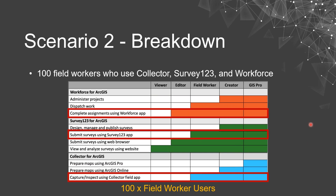For our field workers who need to use Collector, Survey123, and Workforce: to use Survey123 and Collector as native apps you need a field worker user type and above — this includes offline capabilities. Even though Workforce can be completed with an editor level, everything else corresponds to field workers, so it makes sense to grant 100 field worker user types for our 100 field workers.